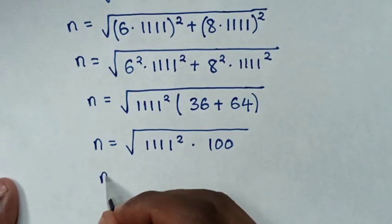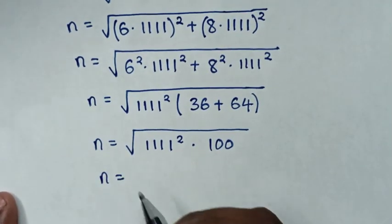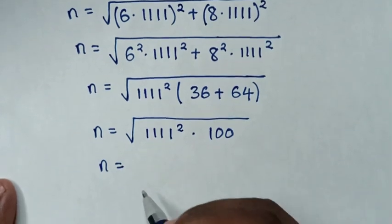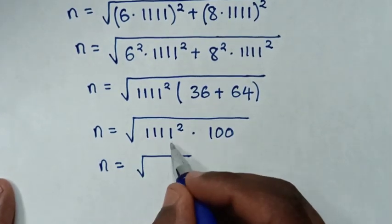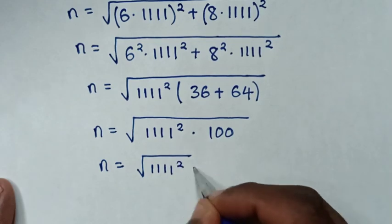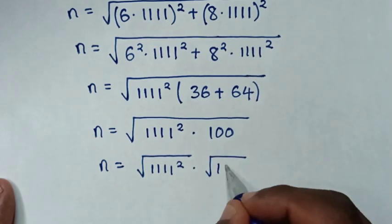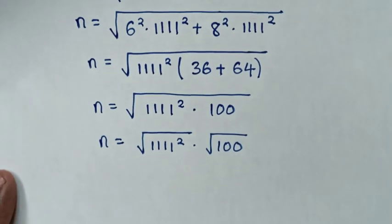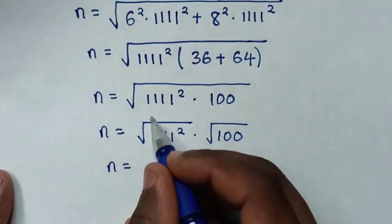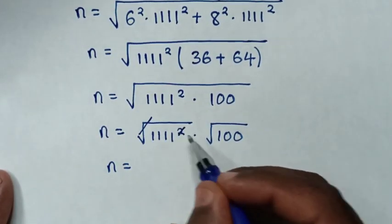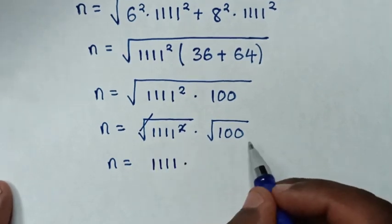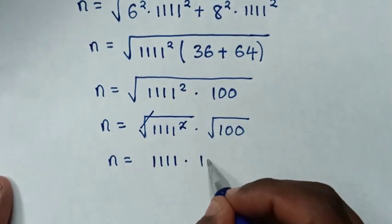Then n is equal to the square root of 1,111 squared times the square root of 100. The square root cancels the square, so it becomes 1,111 times 10, which equals 11,110. Therefore, n is equal to 11,110.